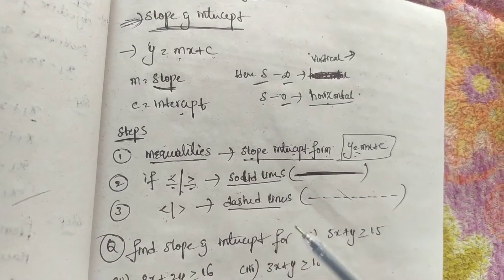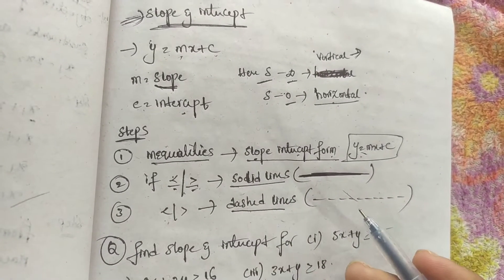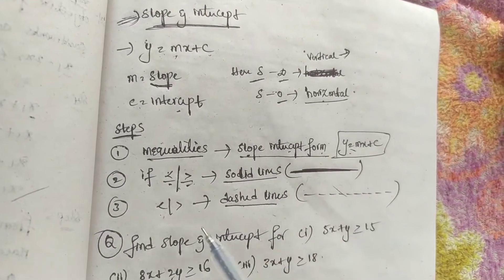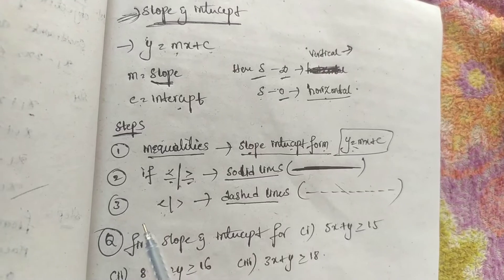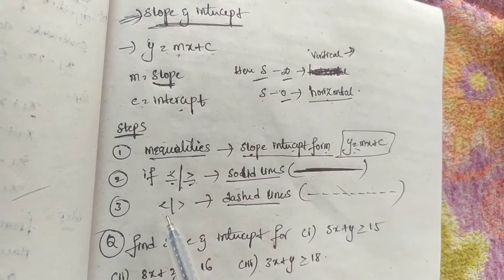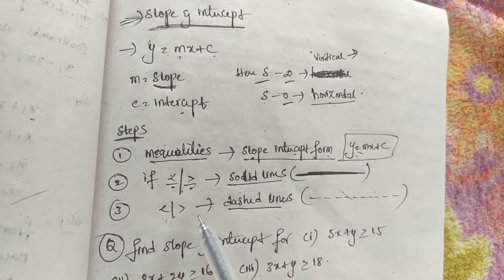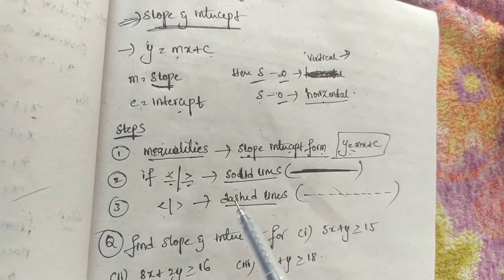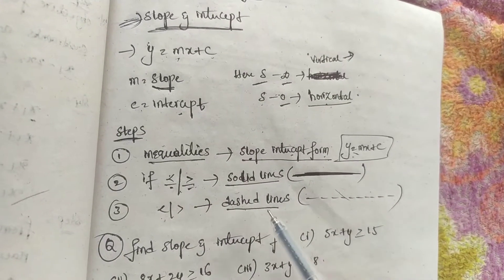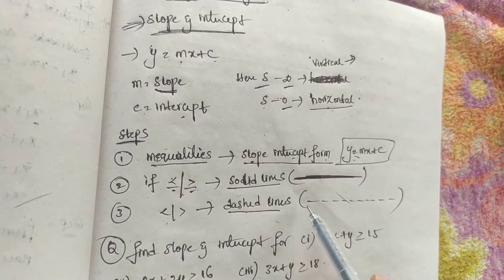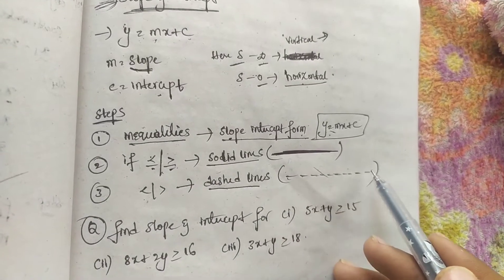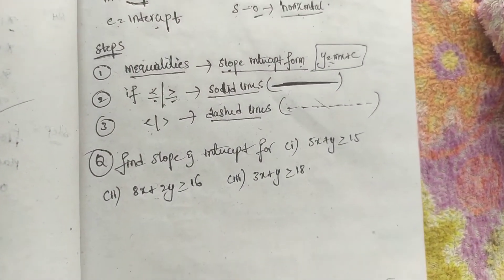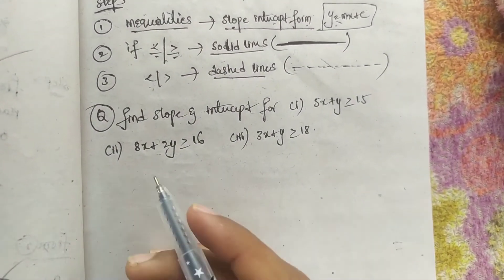For constants that are less than or equal to type, we use solid lines to draw the graph. If the constants are strictly less than or greater than type, we draw the graph with dashed lines. Let us do an example problem.